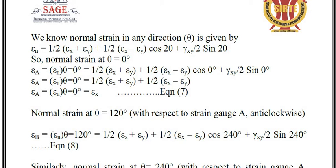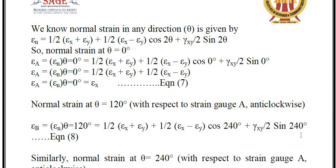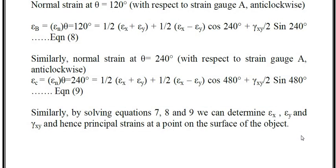The normal strain at theta equal to 0 gives equation 7, theta equal to 120 degrees gives equation 8, and theta equal to 240 degrees gives equation 9. From the relationship between equations 7, 8, and 9, we find the principal strain at a point on the surface of the object.